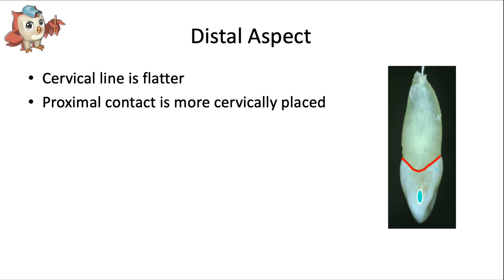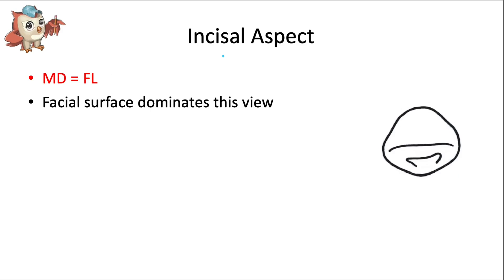From the distal surface, the cervical line appears much flatter — about one millimeter less curved on the distal surface than on the mesial surface. The proximal contact is more cervically placed on the distal surface compared to the mesial surface. Note that the proximal contact area is centered on the crown both incisocervically and faciolingually. It's actually the most cervical proximal contact of any incisor, because of how curved that distal surface is.